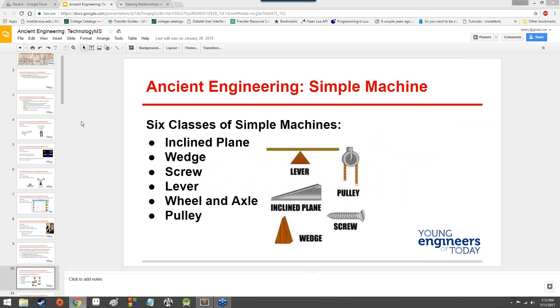A simple machine is a device that makes performing work easier by accomplishing one or more functions, either transferring a force from one place to another, changing the direction of the force, increasing the magnitude of the force, or increasing the distance or the speed of the force. We've got six classes of simple machines. You've got an inclined plane. You've got a wedge. You've got a screw. You've got a lever. You've got a wheel and axle, and a pulley.